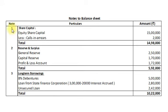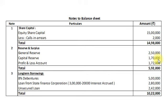Notes to the balance sheet. Note number 1 is for Share Capital: Equity Share Capital Rs.15,00,000 minus Calls in Arrears Rs.2,000, so Share Capital will be recorded at Rs.14,98,000 in the balance sheet. Note number 2 is for Reserves and Surplus: General Reserve Rs.2,50,000, Capital Reserve Rs.1,70,000, and Profit and Loss Account Credit Balance Rs.1,72,000, giving total Reserves and Surplus of Rs.5,92,000.